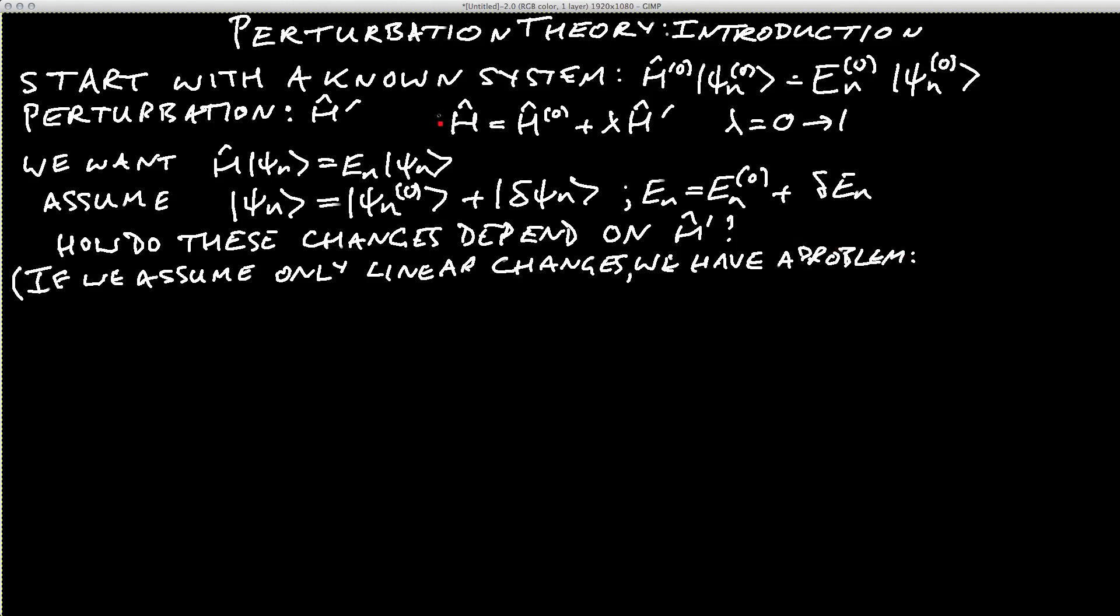Because when we act with the new Hamiltonian there's a factor of λ, but then ψₙ has a factor of λ implicitly in the Δψₙ term. So we get λ squared. We will find terms in λ² when we consider H' acting on Δψ.